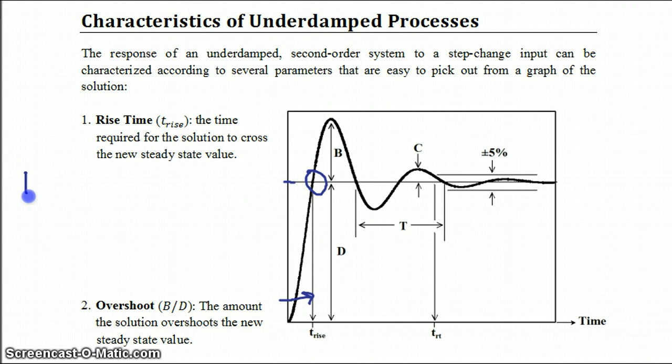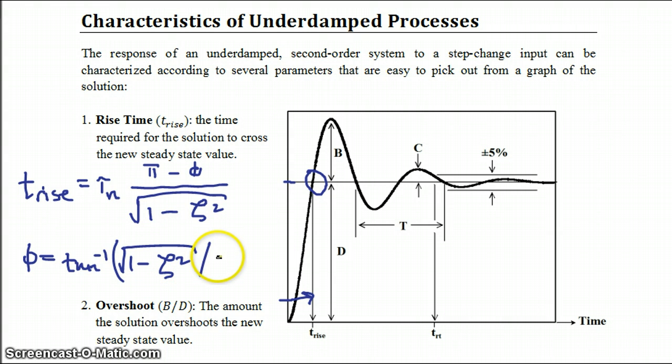Now there's an analytical expression for your rise time in terms of the parameters that you can find in your second order differential equation. So your rise time is going to be equal to your natural period tau n times pi minus phi, divided by the square root of 1 minus your damping factor zeta squared. Where phi is equal to the inverse tangent of the square root of 1 minus the damping factor squared, divided by your damping factor.